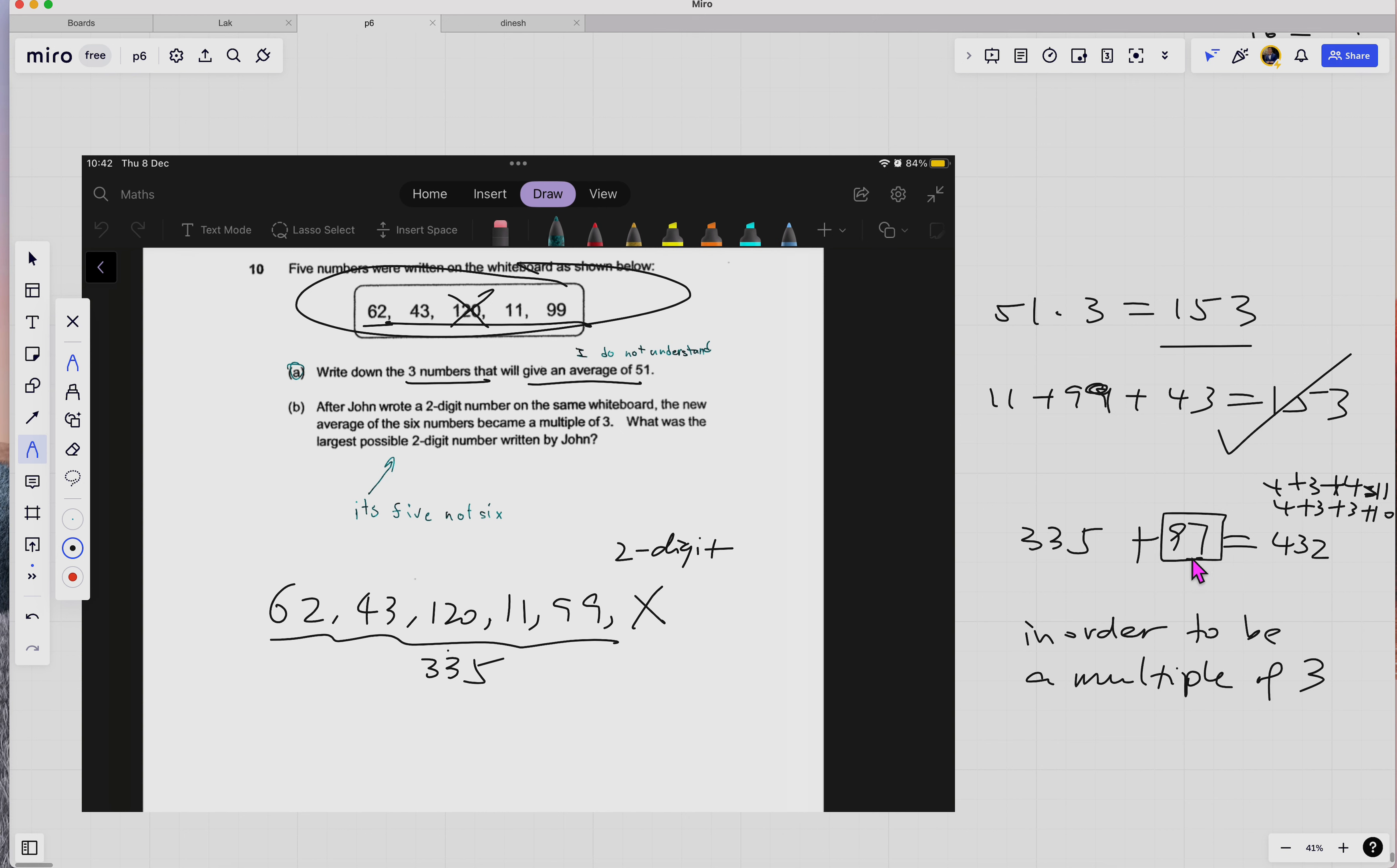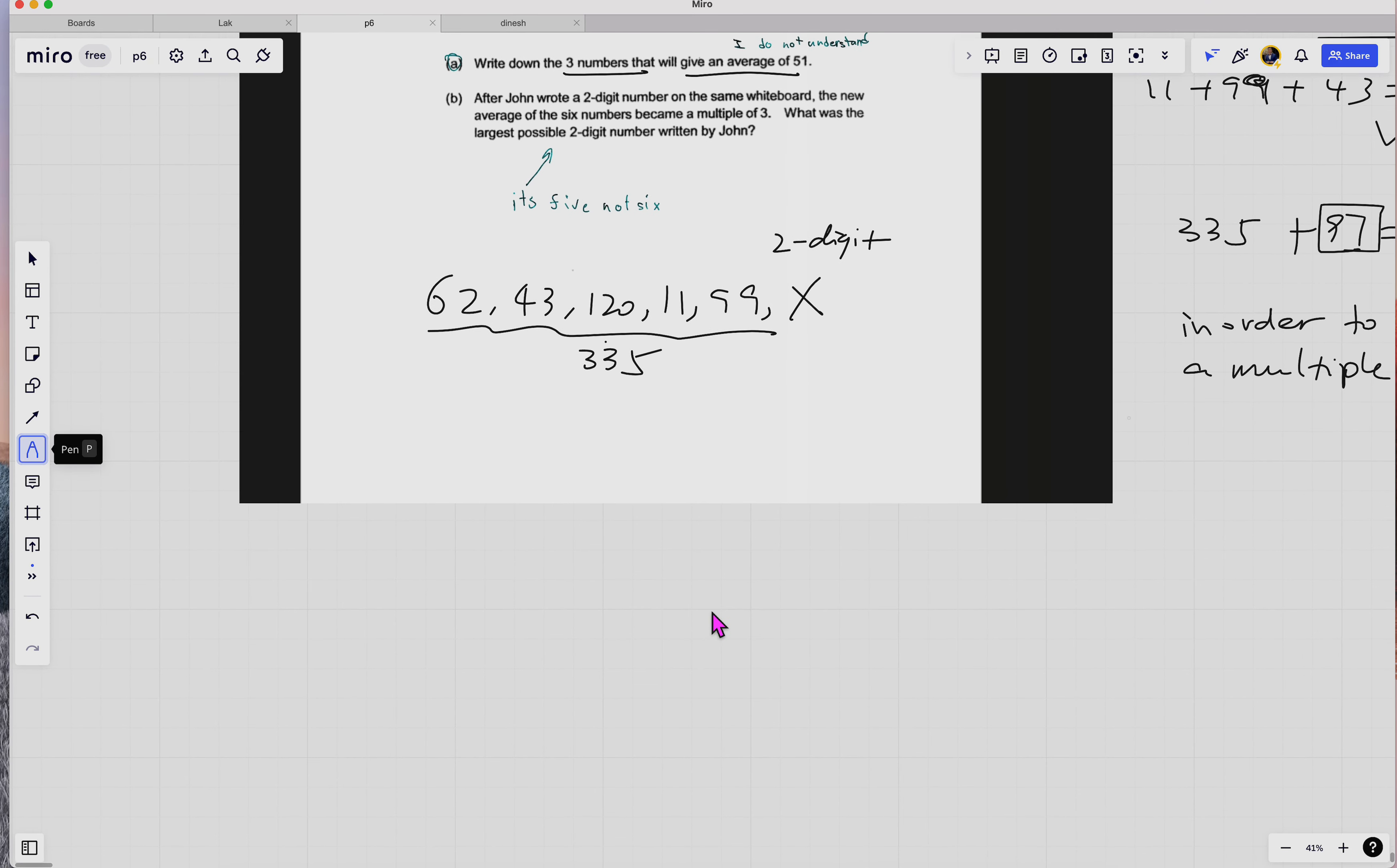Multiple of three. Okay, so you have learned something new today: how do you decide whether it's a multiple of three instead of punching the calculator? Just add up all the digits. Okay, good.